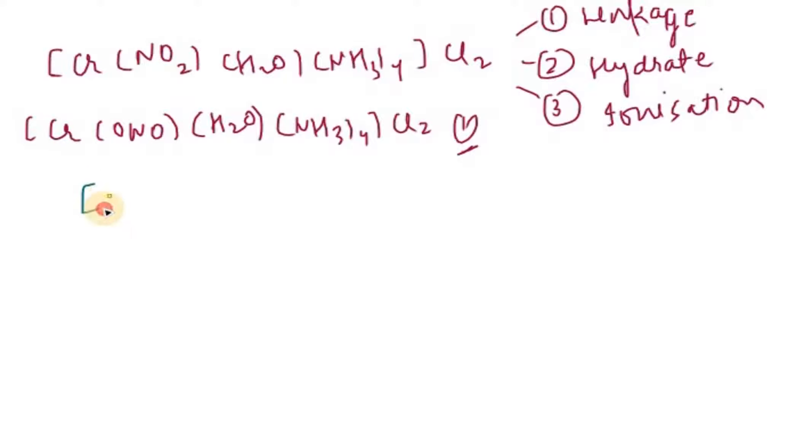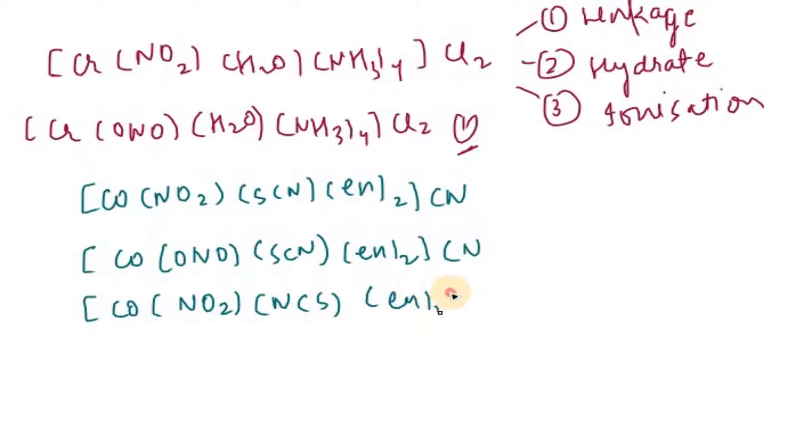We have cobalt NO2, SCN, EN2, then cyanide. Then we have cobalt ONO, SCN, EN2, cyanide. Then we have CO NO2, NCS, EN2, cyanide. Then CO NCS, EN2, cyanide.